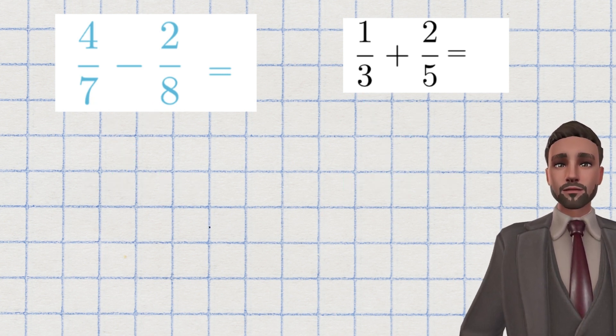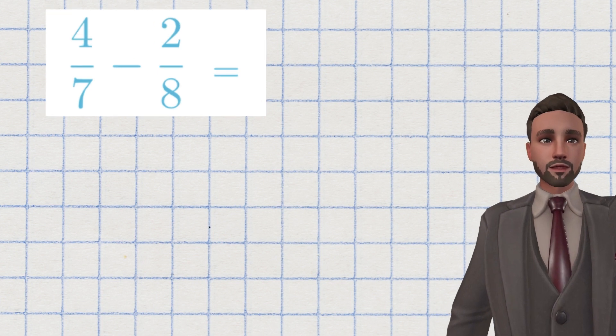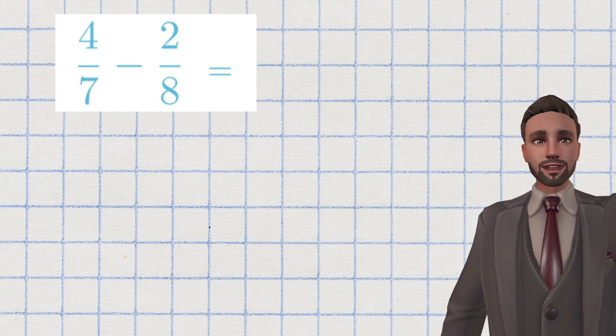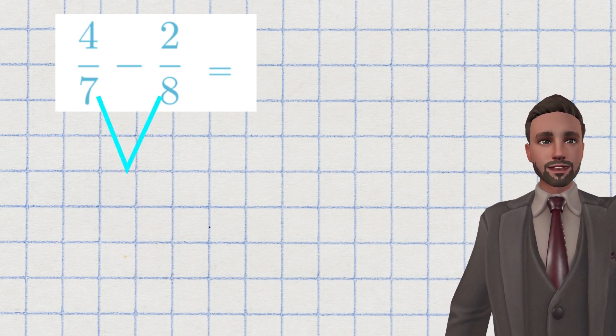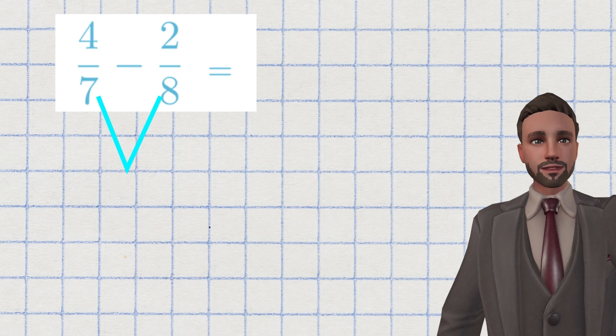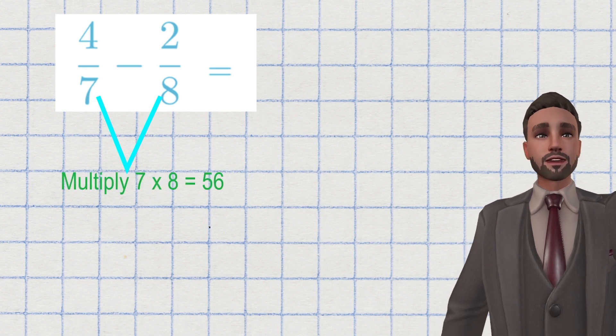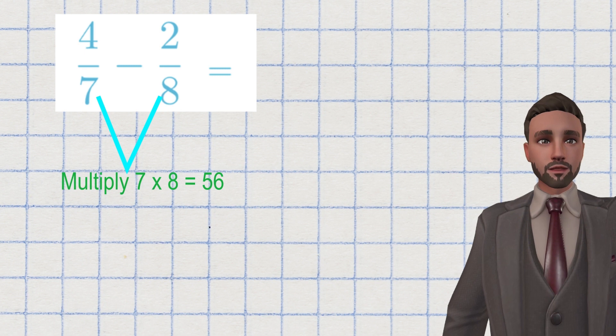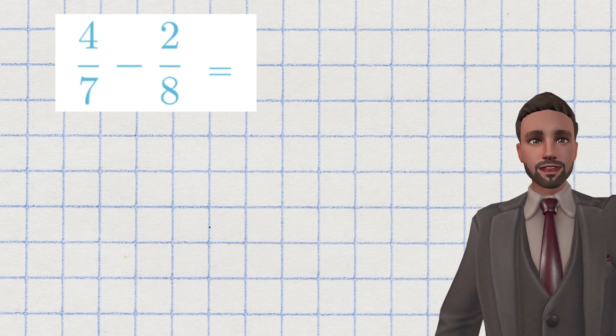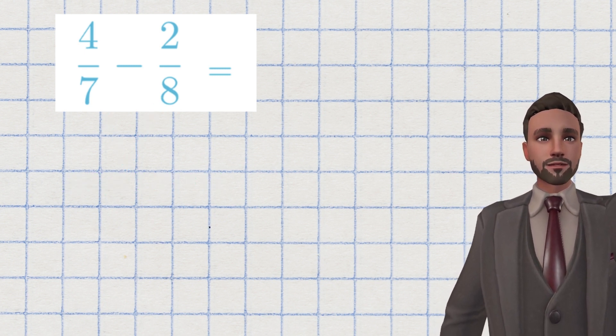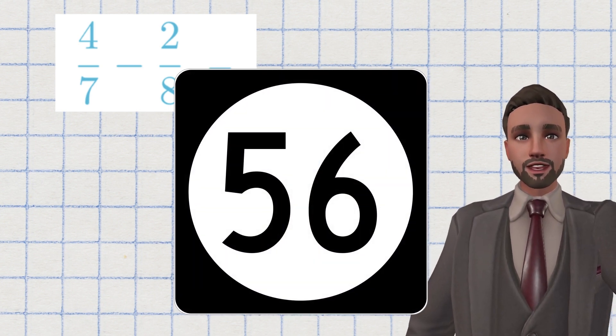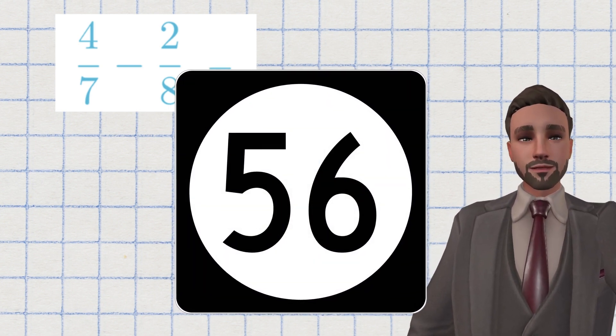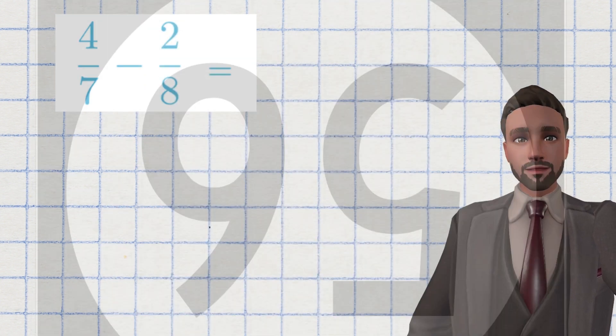For example, here for this question, four sevenths subtract two eighths. I have two different denominators, sevenths and eighths. So to find a common denominator, I would simply multiply the seven and the eight, giving me 56. This tells me that both fractions can be converted into an equivalent fraction over 56. So now I know 56 is a common denominator. I can convert both of these fractions into an equivalent fraction over 56.